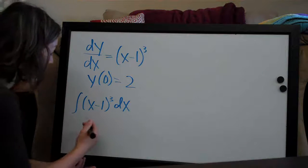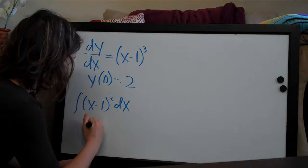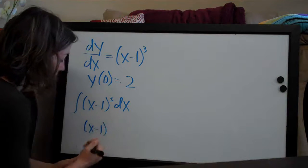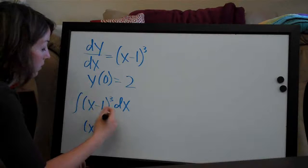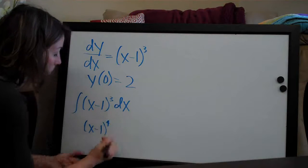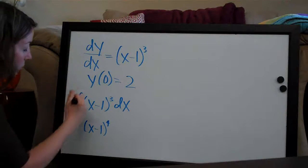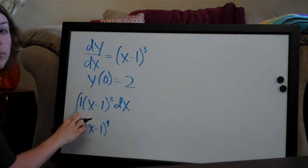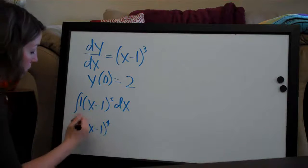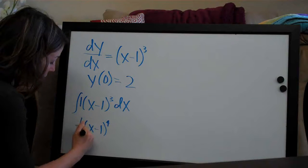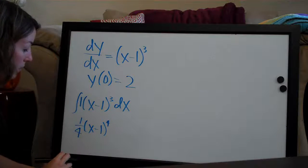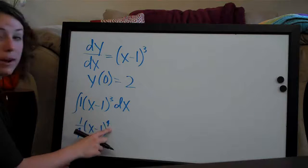So the first thing we're going to do is keep this x-1. We add one to the exponent, so three plus one is four, and then we divide the coefficient which is one implied right here by the new exponent. So we're going to have one-fourth out in front here, the coefficient divided by the new exponent.